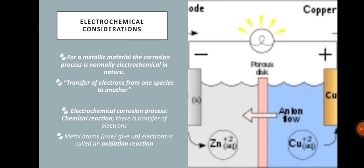Electrochemical considerations: For a metallic material, the corrosion process is normally electrochemical in nature. This means that there is a transfer of electrons from one species to another. In the electrochemical corrosion process, the electrons generated from each metal atom that is oxidized must be transferred to and become part of a chemical process called a reduction reaction.